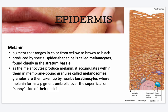Inside the keratinocytes, melanin forms a pigment umbrella over the superficial or sunny side of the nucleus, shielding their genetic material from the damaging effects of UV radiation. It is healthier to have active melanocytes because they protect you from UV radiation of the sun. People with lighter skin, who have less active melanocytes producing less melanin, are more prone to skin cancers. Filipinos, being more morena, have more active melanocytes and are therefore better protected from the sun.